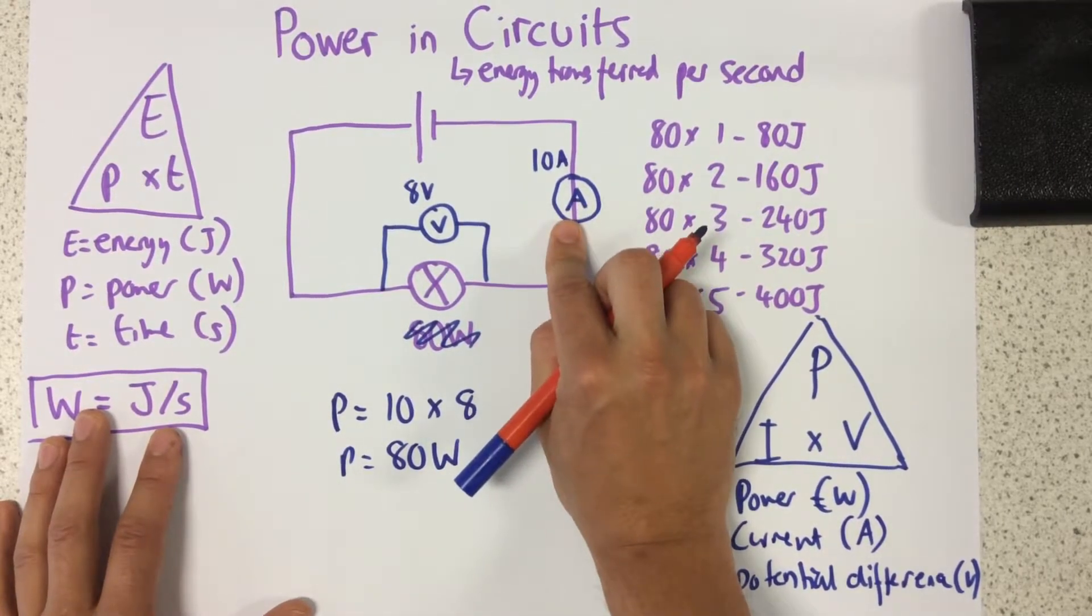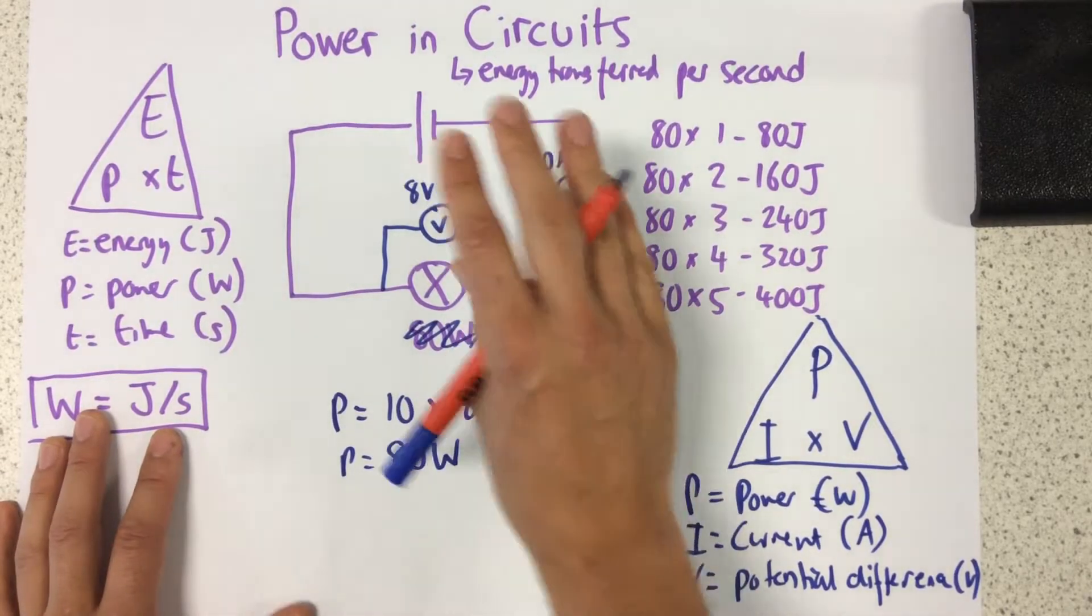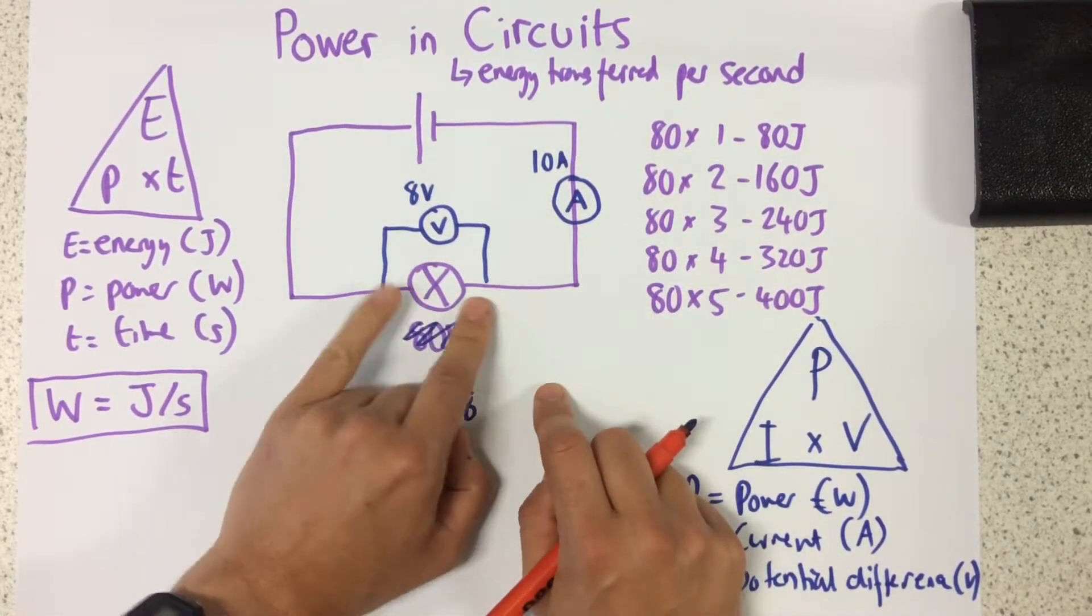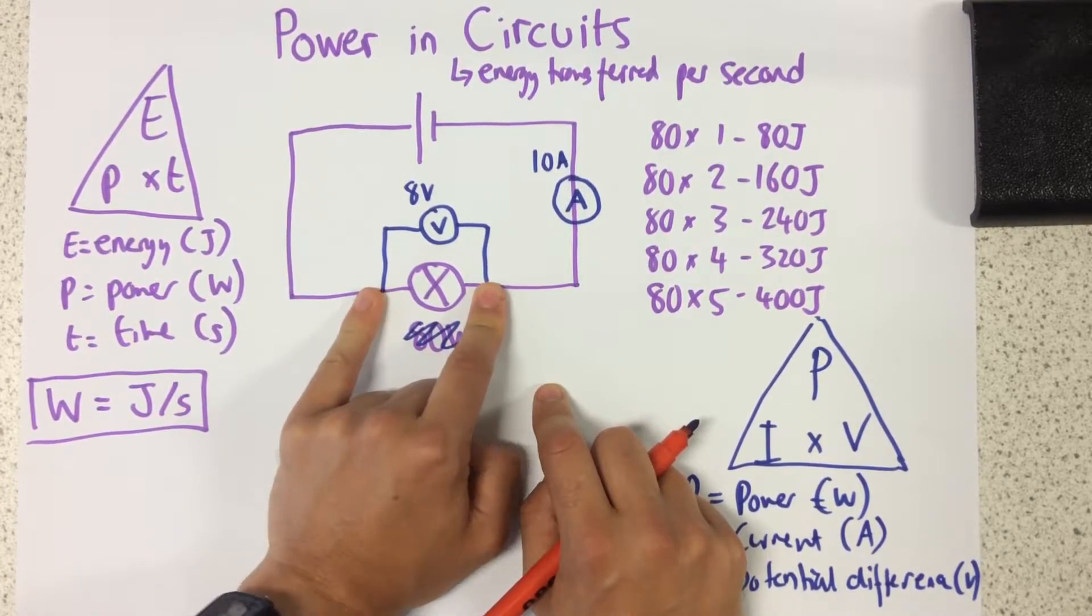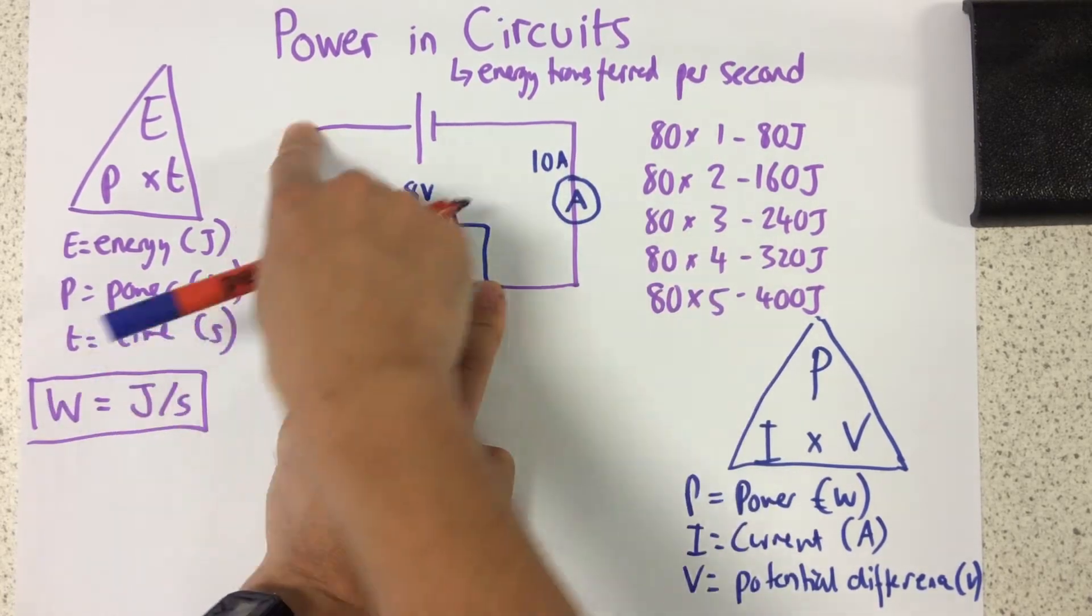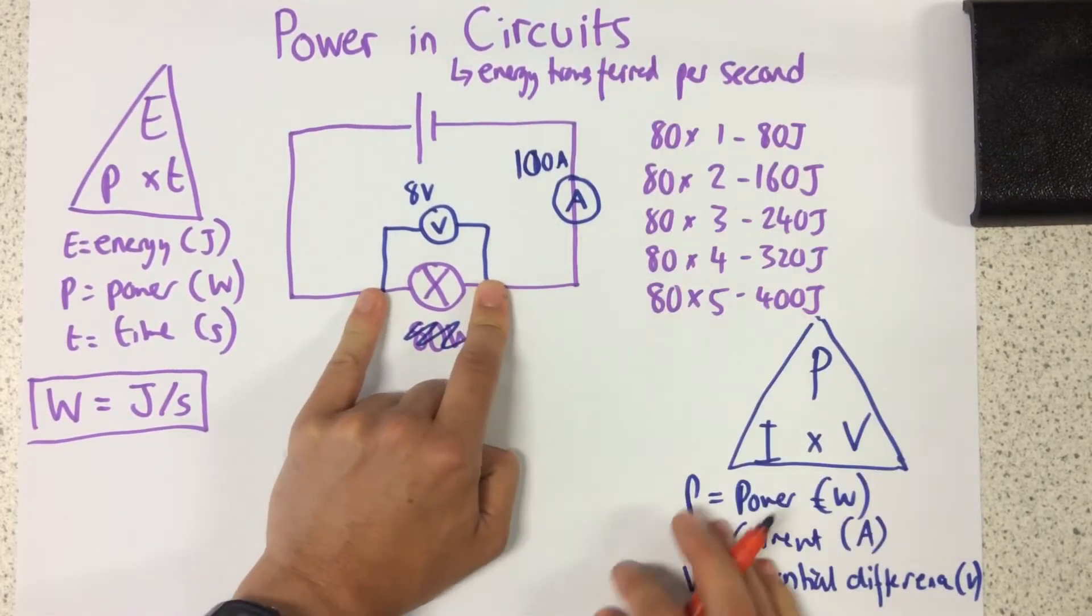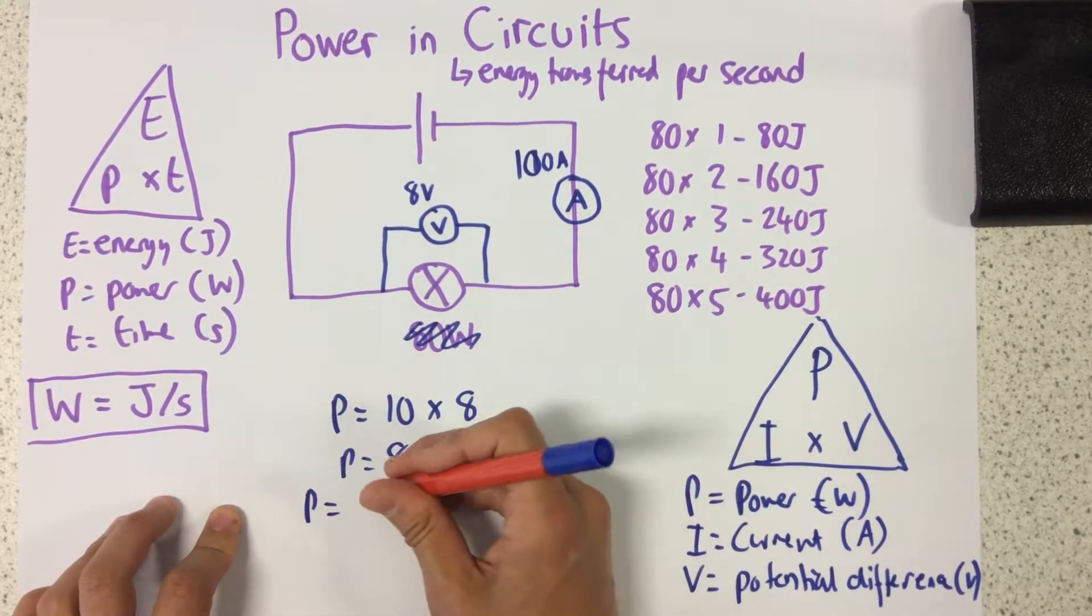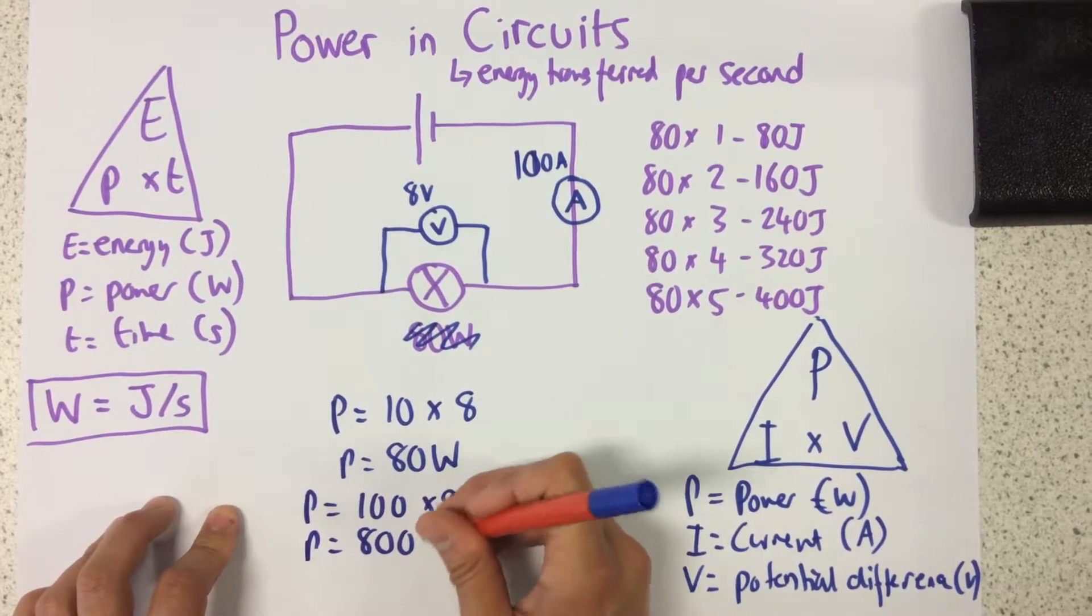Now let's imagine if I increased my current and kept everything else the same. So if I increase my current, that just means that the same amount of energy is being transferred by this component. But it's going to be transferring at a much faster rate because my current has gone up. So let's say I've now got 100 amps instead. That's going to result in my power going up because now I've got 100 times 8. So my power would now be 800 watts.